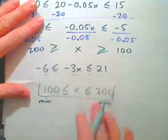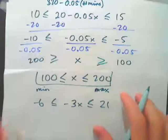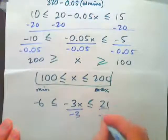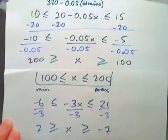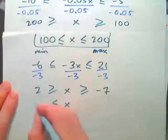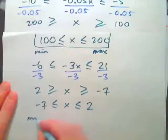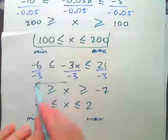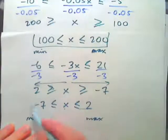Let's try one more example: negative 6 ≤ negative 3x ≤ 21. Go ahead and pause the video and try it yourself. You need to get x by itself, so divide by negative 3 everywhere. We get positive 2 on the left, negative 7 on the right, and x in the middle. But since we divided by a negative, we change the direction of the inequalities. The final answer should have the minimum on the left and maximum on the right: negative 7 ≤ x ≤ 2, meaning x is greater than or equal to negative 7 and less than or equal to 2.